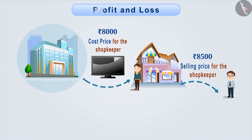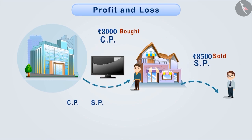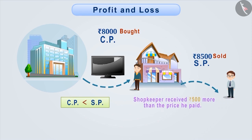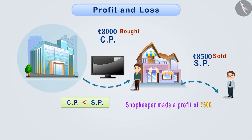Now, let's understand what is profit and loss. The shopkeeper purchased the television for Rs. 8000 and sold it for Rs. 8500. That means, selling price is greater than the cost price. In this situation, the shopkeeper received Rs. 500 more than the price he had paid. We say that there is a profit of Rs. 500 for the shopkeeper. When the selling price is greater than the cost price, profit is equal to selling price minus cost price.